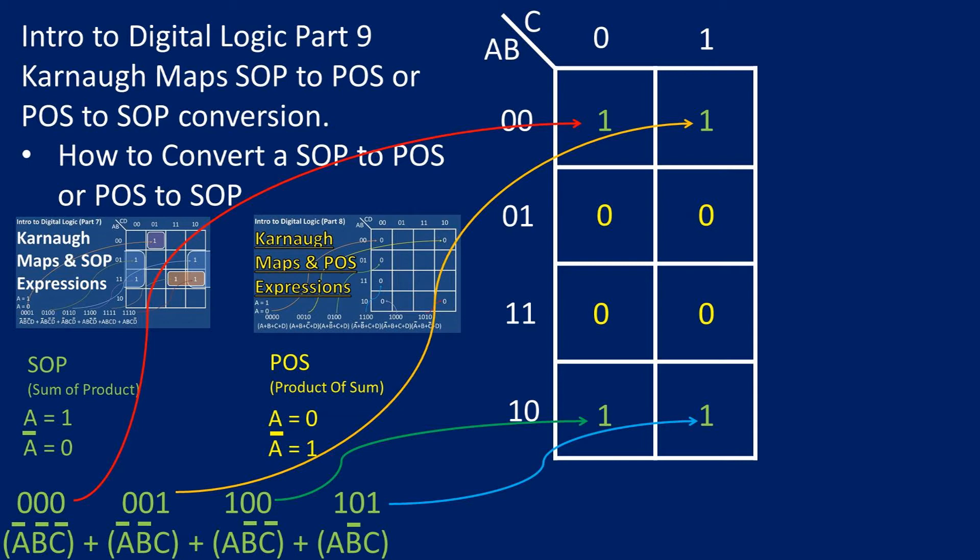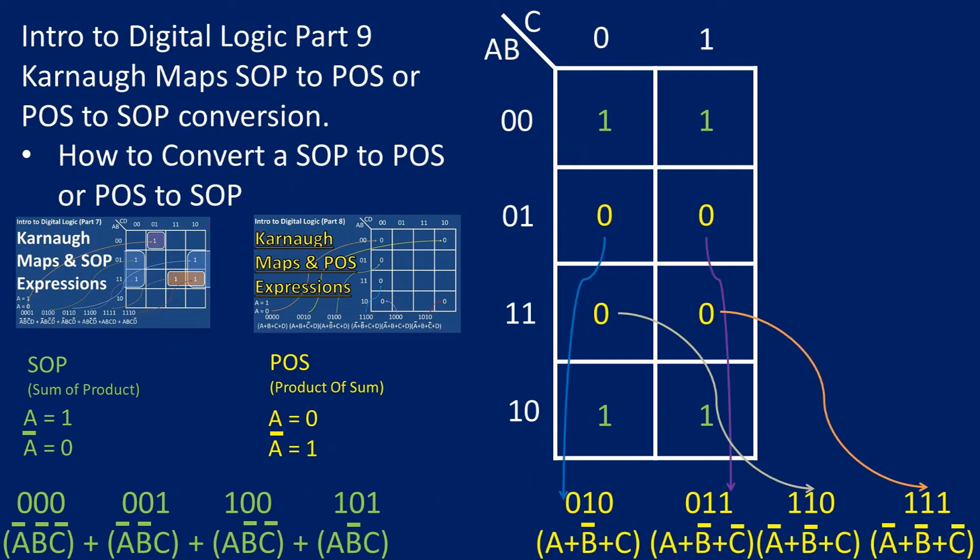Recall that for a product of sums expression, a variable is equal to zero and a variable with line over top is equal to one. Using this, we can convert to a POS expression. We get the displayed product of sums expression that is equivalent to the sum of products expression.